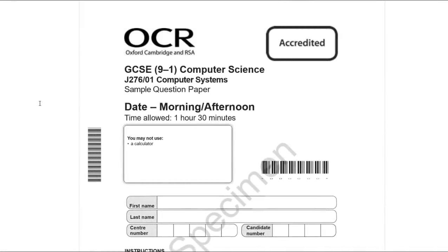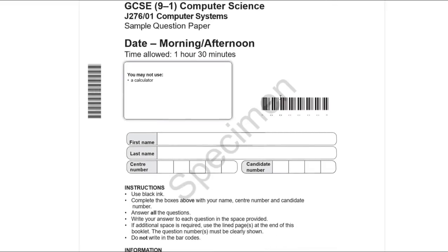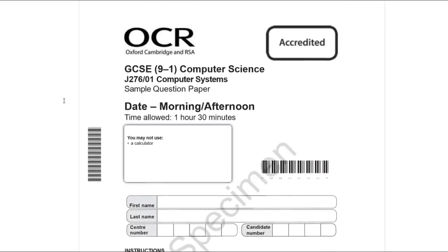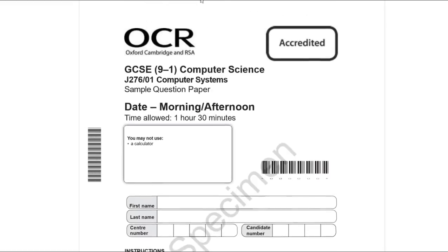This is a walkthrough of the OCR GCSE 9-to-1 Computer Science Paper 1 — the computer systems exam. It's a sample question paper, which means it was never actually sat by anyone; it was produced to give people an example of what a paper would look like. You can't forget it's a specimen because it's written as a watermark on every page.